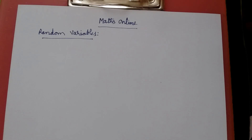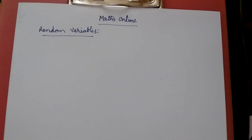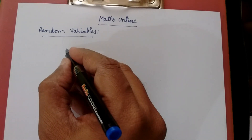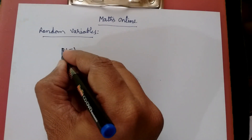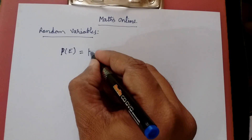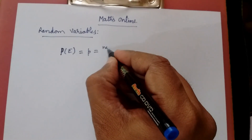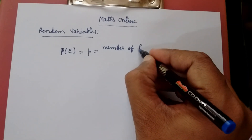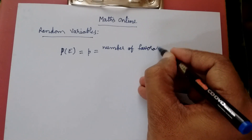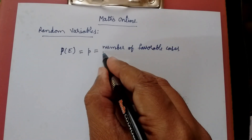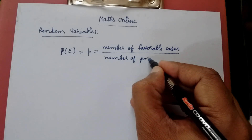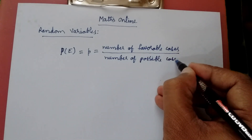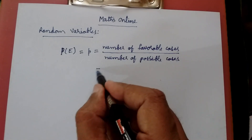Hello everybody, I am Syed. Today I will be dealing with random variables. Before I move on to random variables, let me give you the basic definition of probability. The probability of an event, where E represents an event, is equal to the number of favorable cases divided by the number of possible cases.